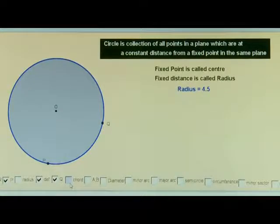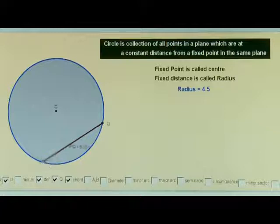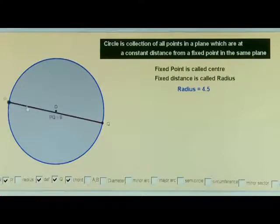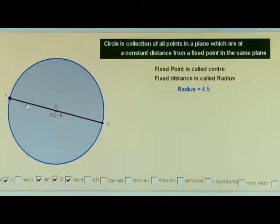Take two points P and Q on the circle. Draw a line segment joining these points P and Q. This line segment PQ is known as a chord of the circle. As this chord approaches towards the center, the length of the chord PQ increases, and when it passes through the center, the length becomes equal to double the radius. When it moves away from the center, the length of the chord decreases.